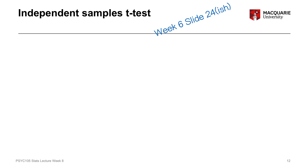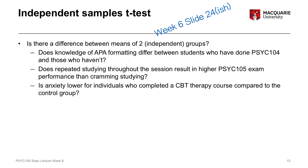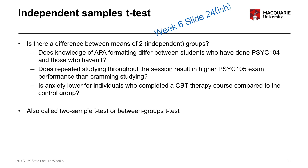The second test is the independent samples t-test, which looks at whether there's a difference in a mean score between two separate or independent groups. For example, two groups of students — those who have versus haven't done PSYC 104 before — tested on their knowledge of APA formatting. Or students who study throughout the session versus those who cram before the exam, comparing exam performance. Or anxiety scores for individuals who completed a CBT course compared to a control group.